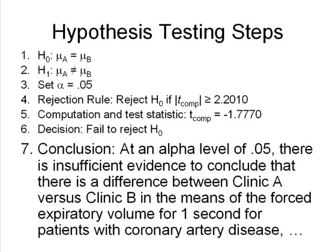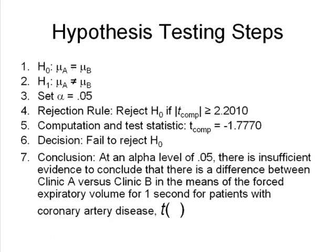There's one more part we need to add, and that's what I call the statistical string. The first part of the statistical string is we state the test we used. In this case we used a t-test, and then in parenthesis we'll put our degrees of freedom.